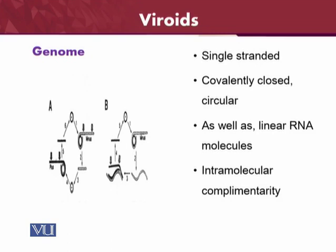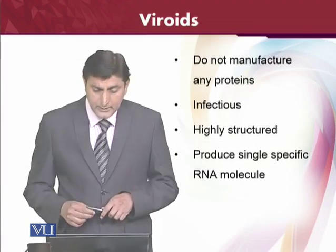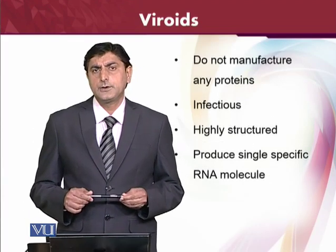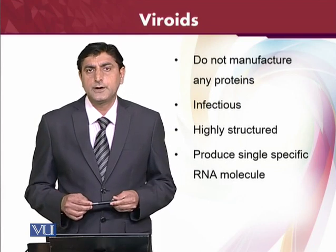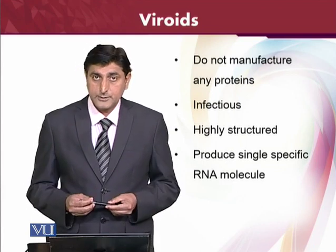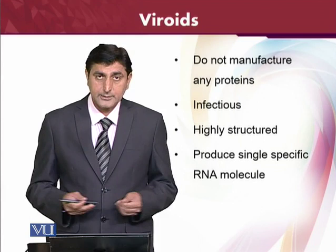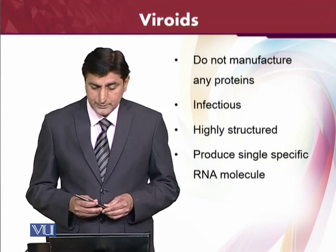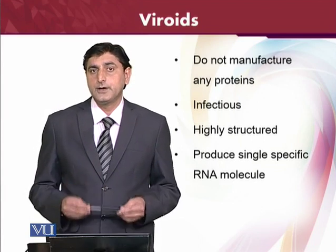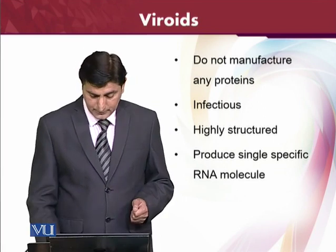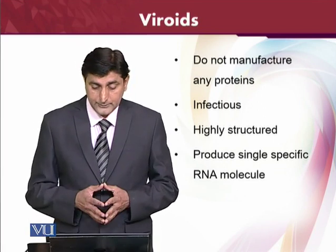Intramolecular complementarity is also present. So here you can see both of them — the covalently closed circular forms and the linear forms are also available. They are RNA molecules; they don't need to manufacture any kind of proteins — they do not have any proteins. They are infectious agents by themselves, able to cause disease as they exist as RNAs.